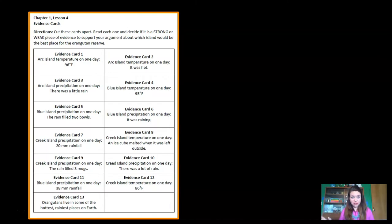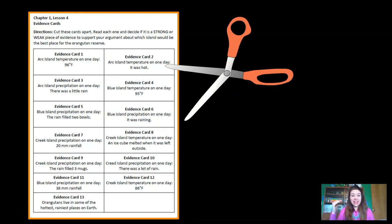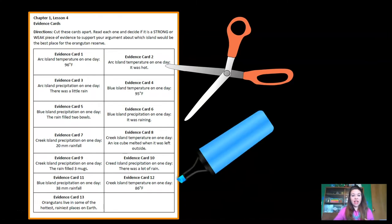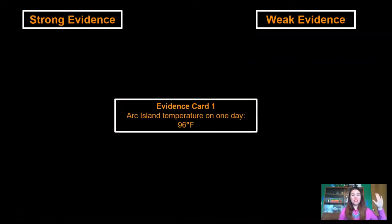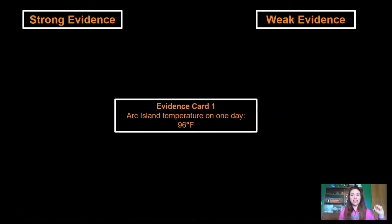We want to answer the question: which island's weather is most like the weather where orangutans live? But first we have to evaluate the evidence sent by the Wildlife Protection Organization — deciding whether it is strong or weak evidence, just like we did with Newburgh and Oldburgh. If you have the evidence cards document, pause this video, get scissors, and cut the cards out because we're going to sort them into strong evidence and weak evidence. If you can't find scissors, you can label each card strong or weak with a marker.